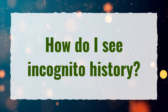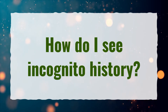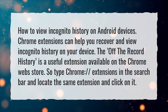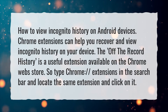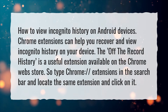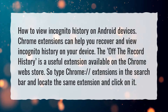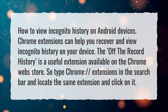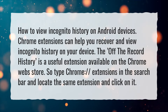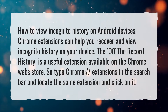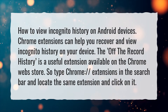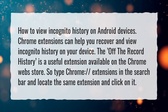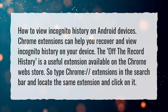How do I see incognito history? Here's how to view incognito history on Android devices. Chrome extensions can help you recover and view incognito history on your device. The Off-The-Record History is a useful extension available on the Chrome Web Store. Type chrome://extensions in the search bar, locate the same extension, and click on it.